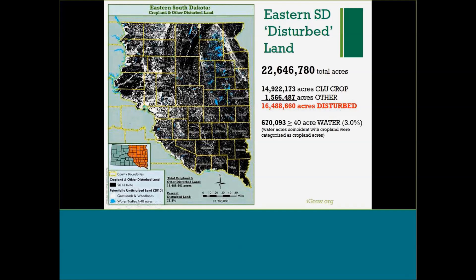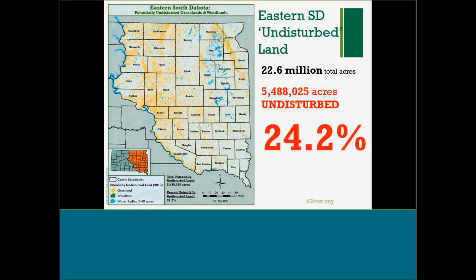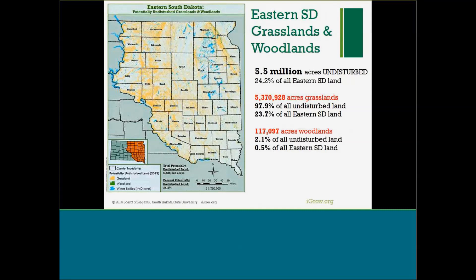Looking at eastern South Dakota as a whole, about 73% of that landscape has a proven disturbance history. The flip side is that about five and a half million acres — 24.5% — is likely intact, which is higher than I thought it would be. If we dig into that number, the vast majority of all undisturbed land is grass, and about 2.1% is woodlands.